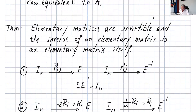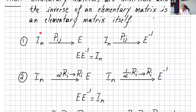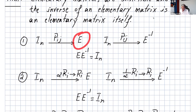Another theorem: elementary matrices are invertible, and the inverse of an elementary matrix is itself an elementary matrix. For row operation one — interchanging two rows — you start with I_n, interchange two rows to get E, and performing the same interchange again gives E inverse. You can verify: E times E inverse equals I_n.